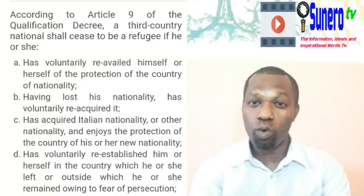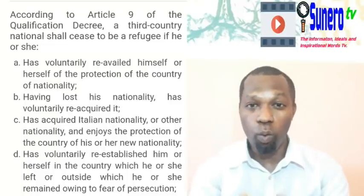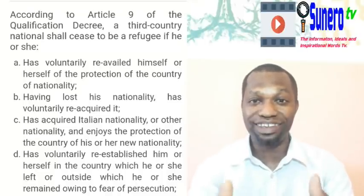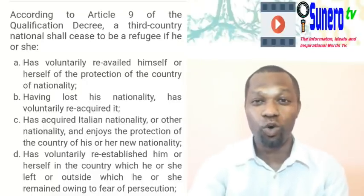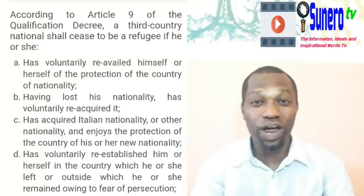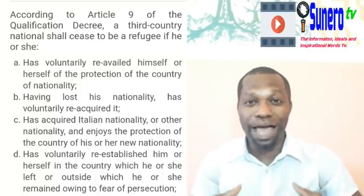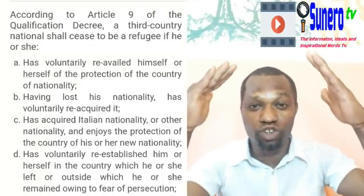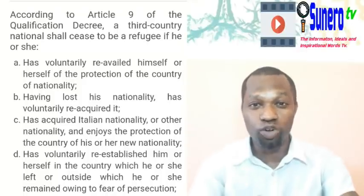If you want to do marriage, first change your document status from refugee or asylum protection to a normal document such as lavoro subordinato, a work permit, or lavoro autonomo. Under a zero or subsidiary document, you are in the country under their protection. But if you change that document to a normal labour document, then you are no longer in this country because of their protection — you are here because of your work.